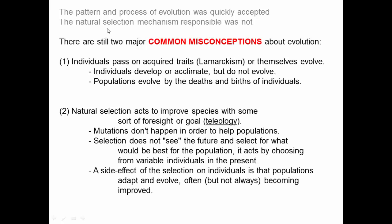Evolution is accepted within the scientific community today, but there are still two major common misconceptions that persist — ones we should have dispensed with over 100 years ago. The first misconception is that individuals pass on acquired traits — a kind of Lamarckianism where organisms themselves evolve. For example, food is high up so organisms stretch their necks and get longer necks, or learn to stand up, and then their offspring will have longer necks or can stand up. A lot of people still think this way.